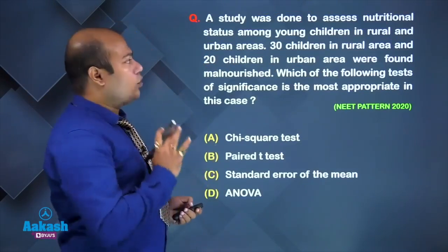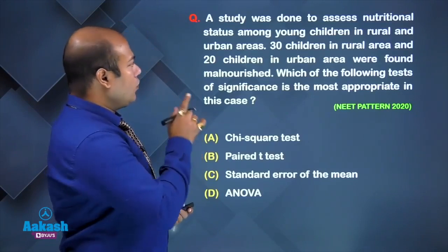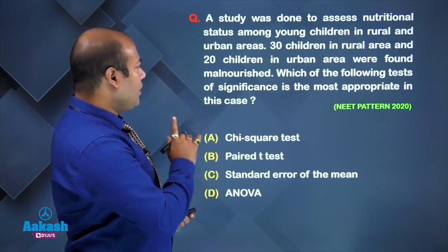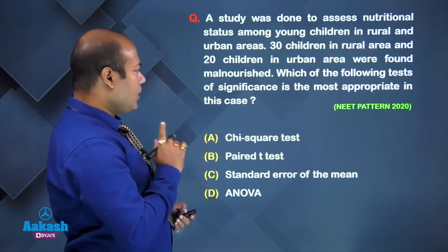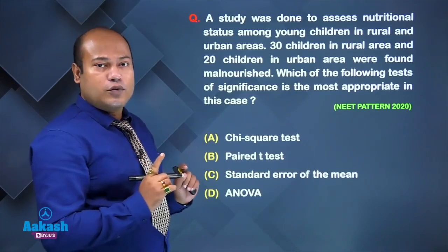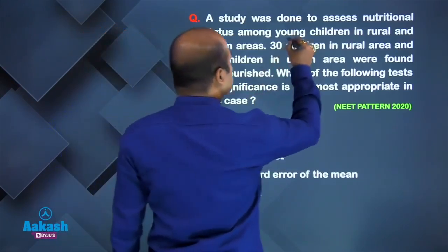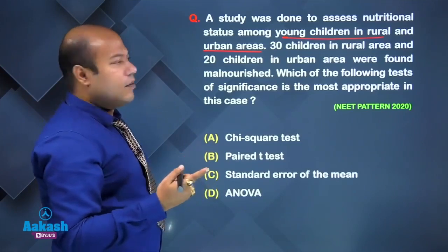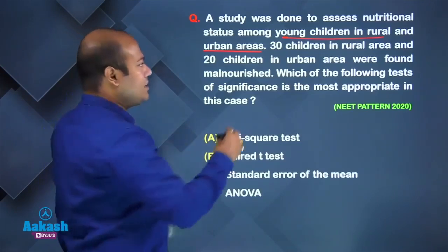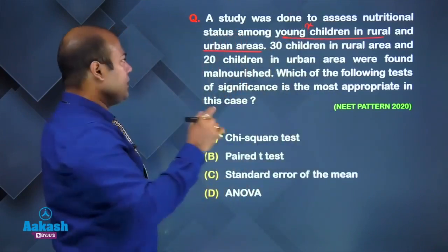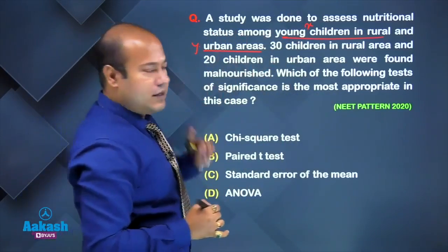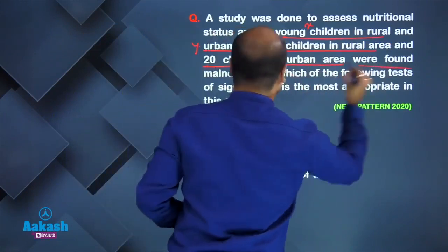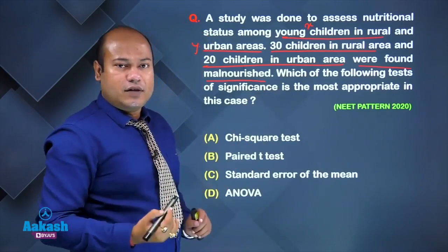A study was done to assess nutritional status among young children in rural and urban areas. 30 children in the rural area and 20 children in the urban area were found malnourished. How many groups are there? Two groups — children in the rural area and children in the urban area. This is an example of fraction or proportion.